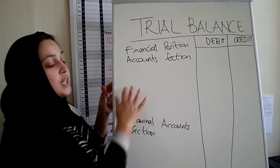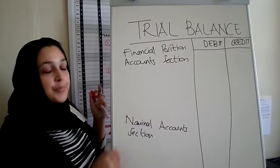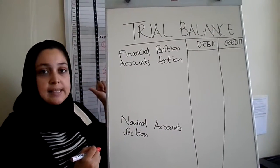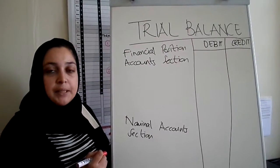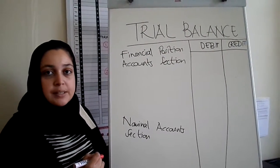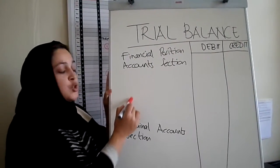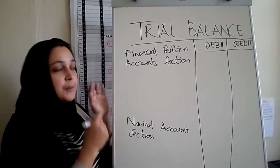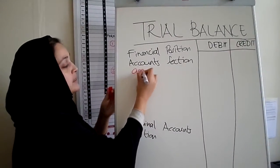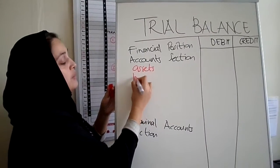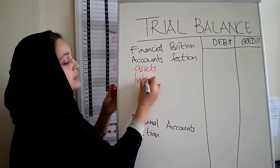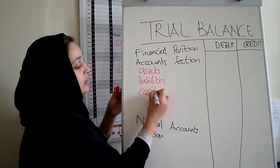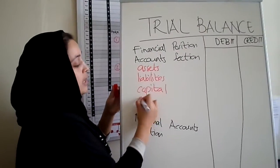So which accounts go where? In the financial position account section you have assets, liabilities, the capital, and the drawings. Those are the four types of accounts which go here, and they need to be listed one underneath the other. So you're going to have all of your assets, all of your liabilities, your capital, and your drawings.